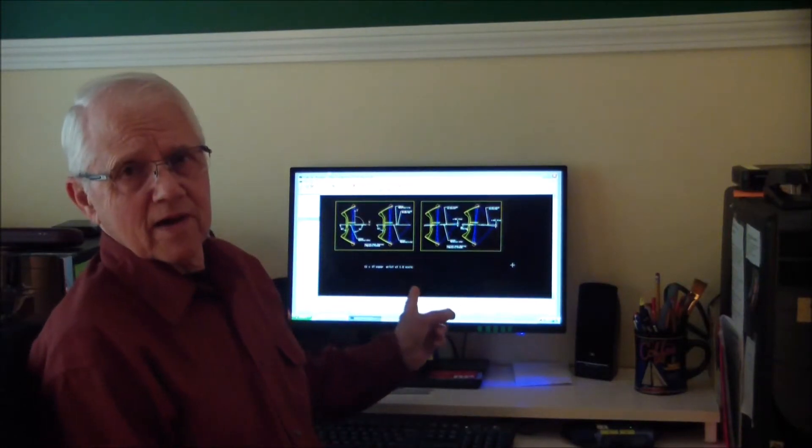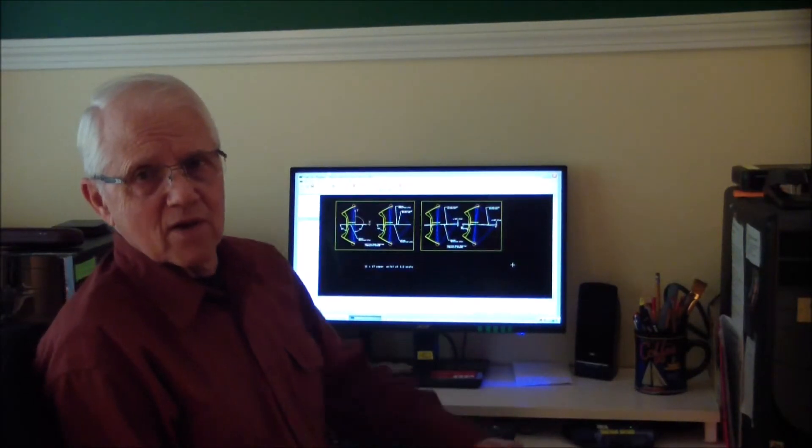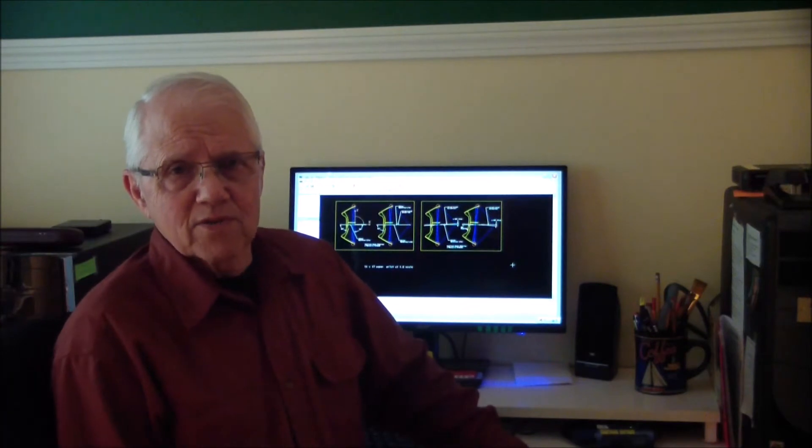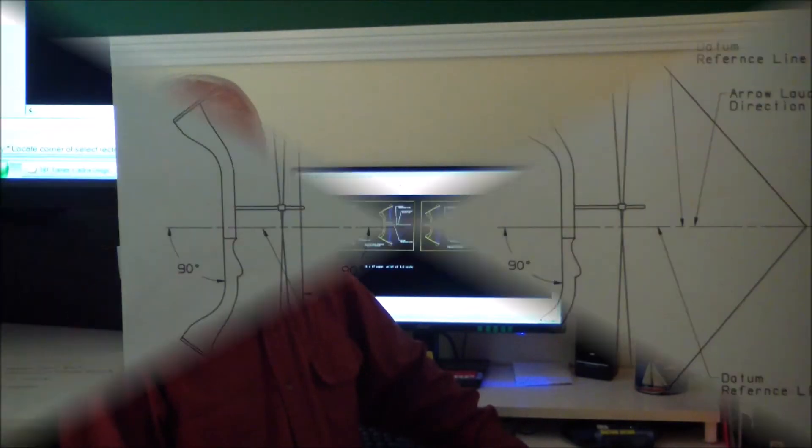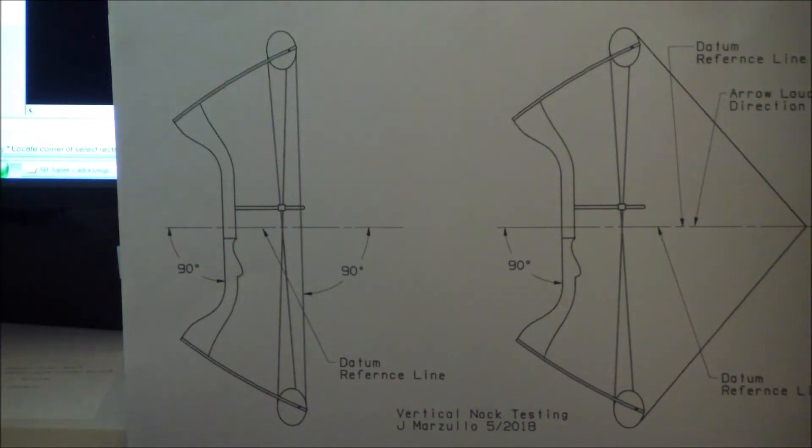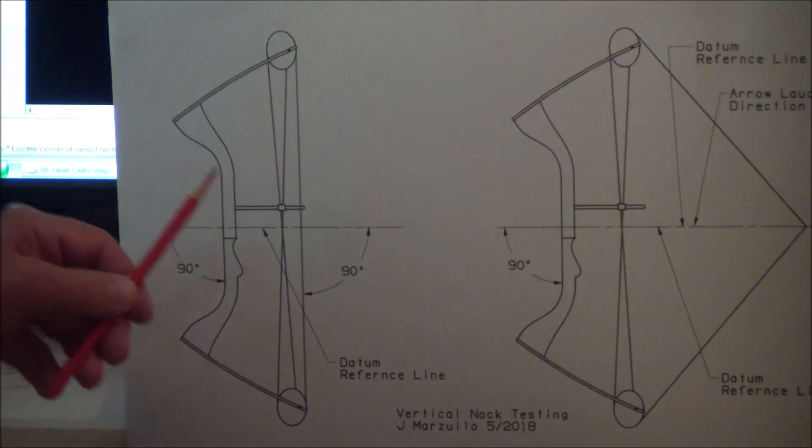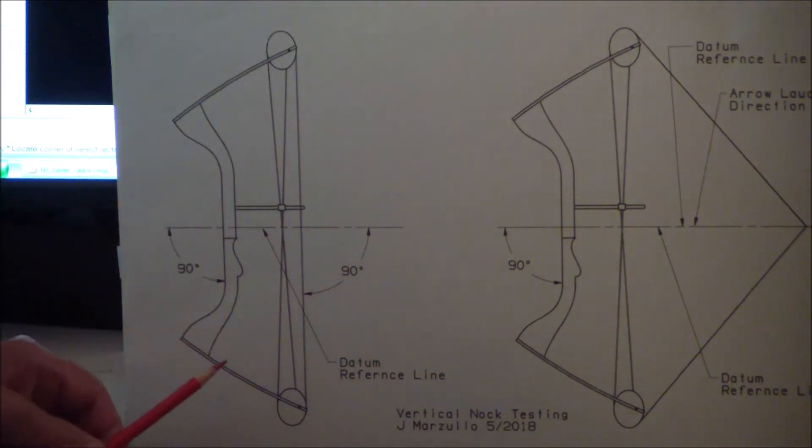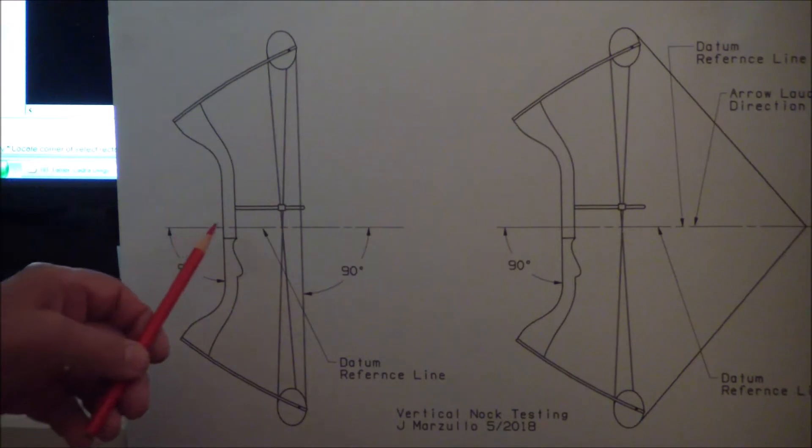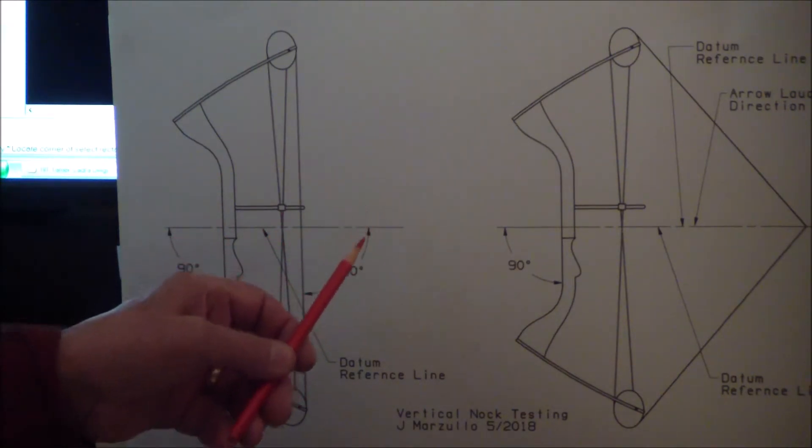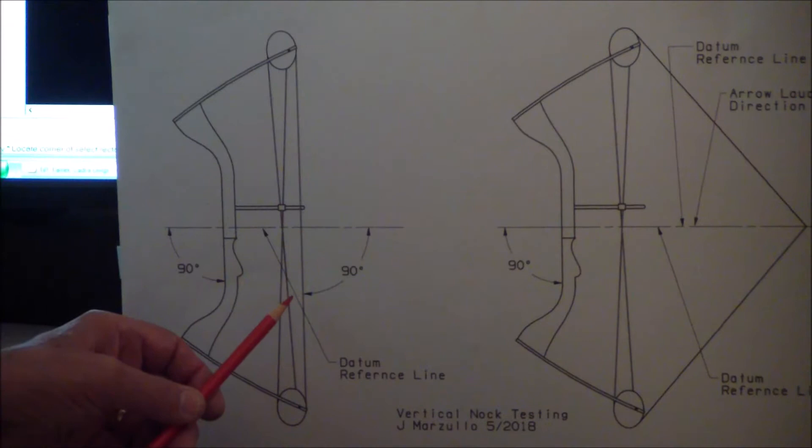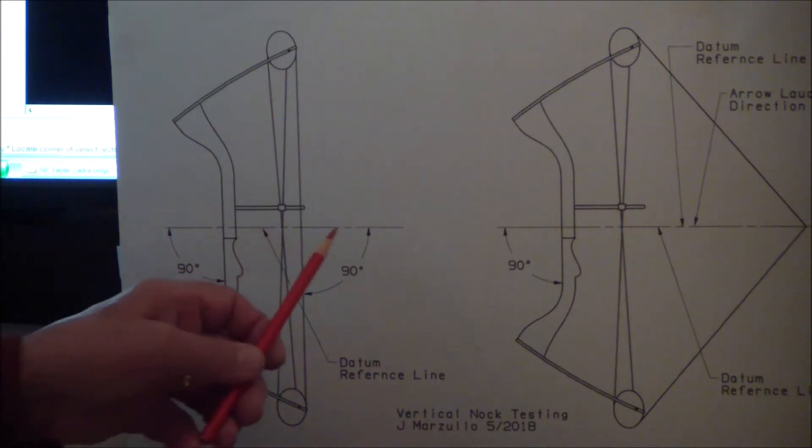So I'm going to show you some drawings that I've made. The drawings are actually from this CAD layout I have right here, but it'd be kind of hard to talk to that, so we're going to talk to the individual drawings. Okay, here's two drawings of a bow. This is the bow shown at brace height, and this is our reference line, and that reference line is 90 degrees to the bow string when at brace height. So we'll call that the datum reference line.